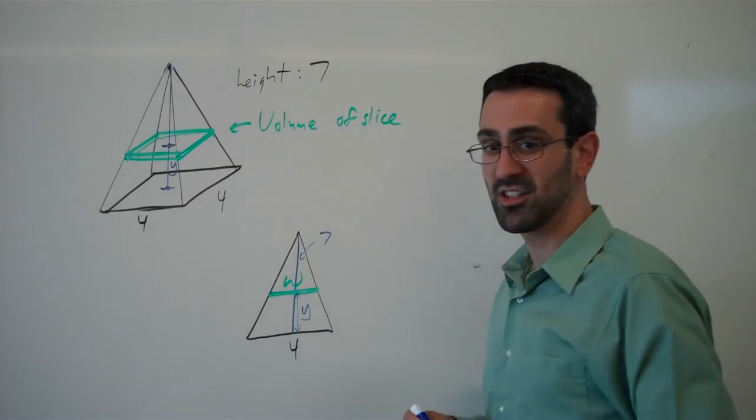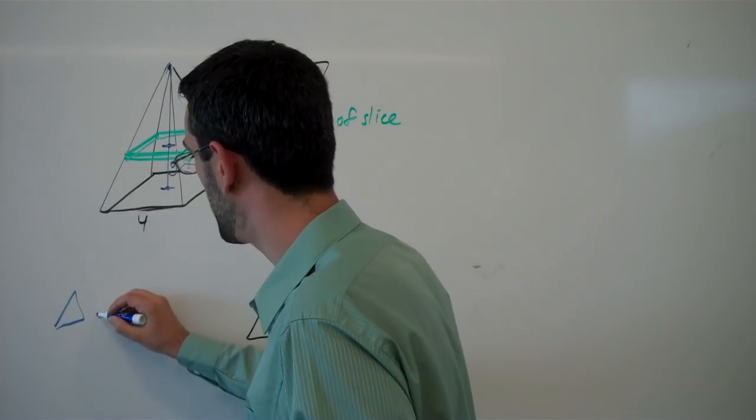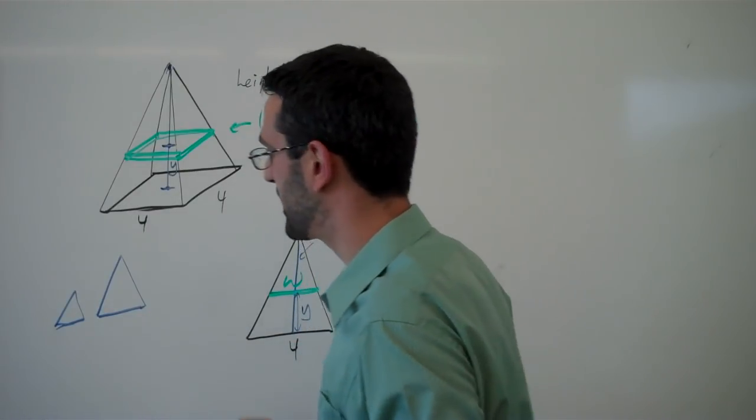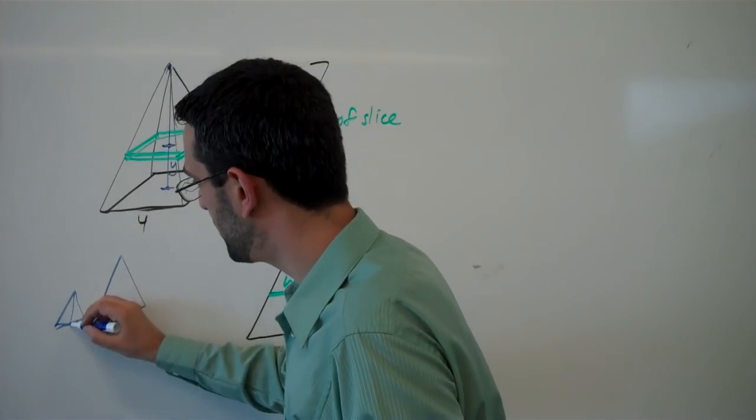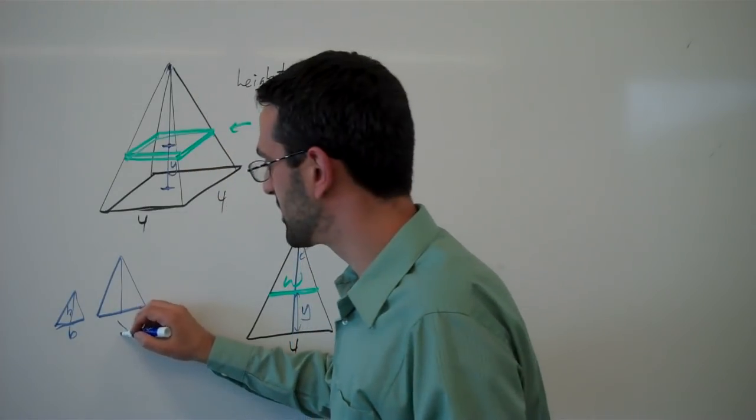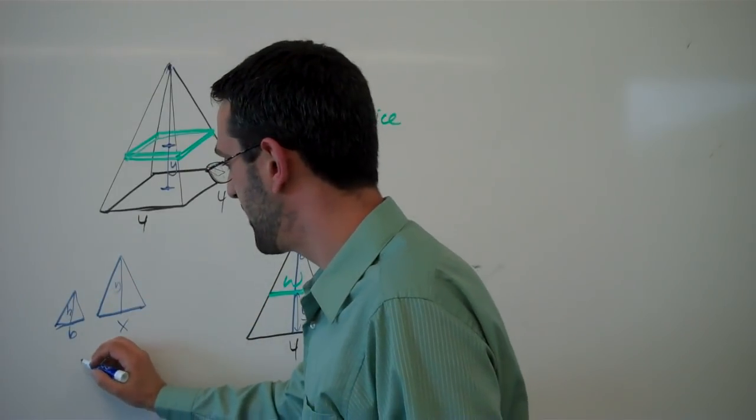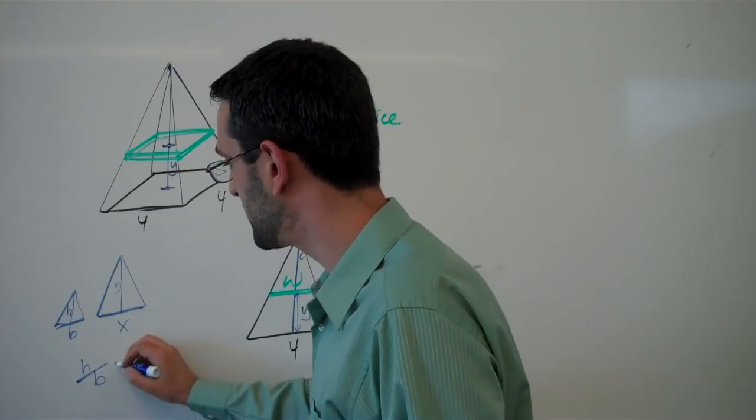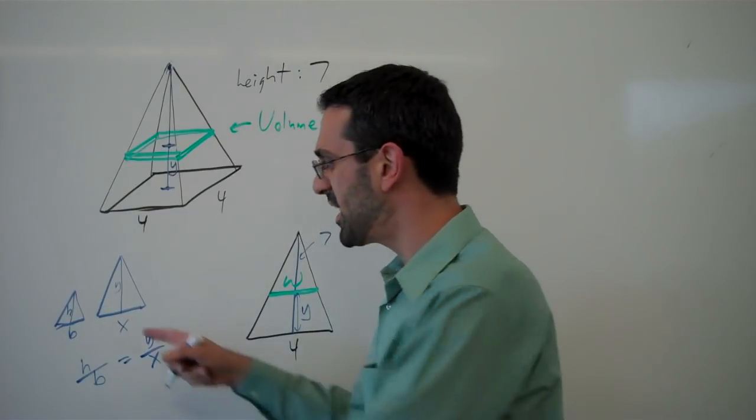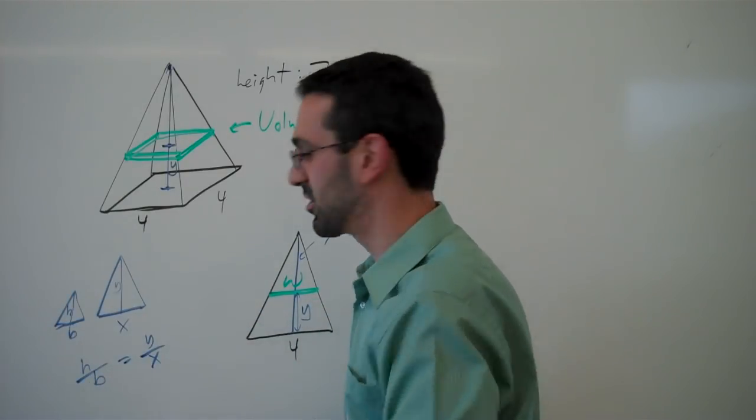And the way we can do that is using an idea called similar triangles. So similar triangles says that if I have two triangles with the same angles, so we're imagining that the angles of this triangle are the same as the angles of that triangle. Then if we look at any two dimensions of the small triangle and the corresponding dimensions of the larger triangle, the ratios will be equal. In other words in this case that the height, the ratio of the height to base for the smaller triangle will equal the ratio of height to base for the larger triangle. And that works for any two sides. You can use hypotenuse slant sides instead of the vertical if you wanted to.